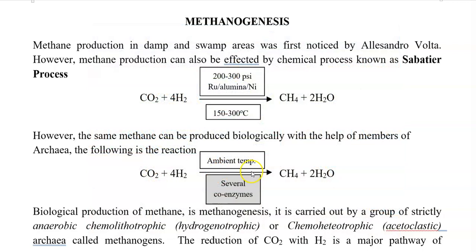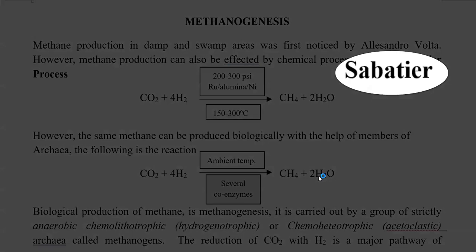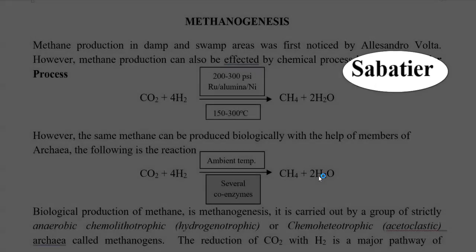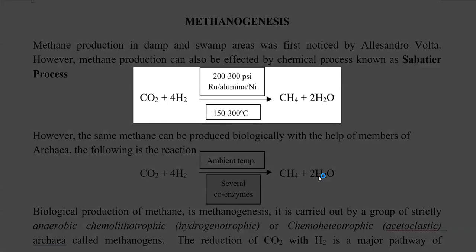Apart from biological production, methane can also be produced using a chemical process referred to as the Sabatier process. In this process, carbon dioxide in the presence of reducing molecules such as hydrogen, at very high temperature and pressure with the help of catalysts like ruthenium, alumina, and nickel, is converted into methane and water.